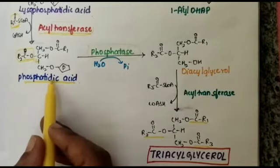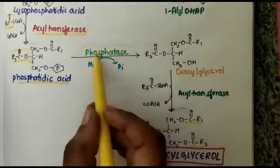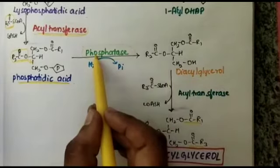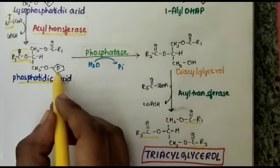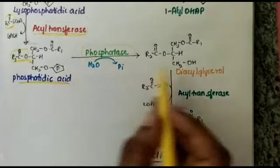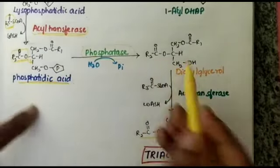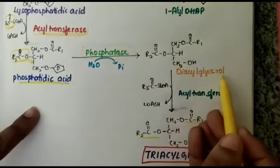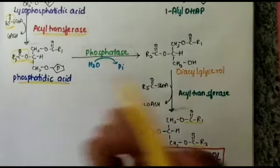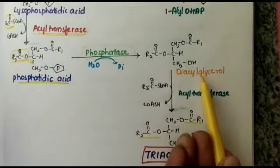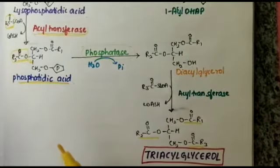This phosphatidic acid will convert into diacylglycerol by the enzyme phosphatase. The phosphate group is replaced by an H group, so it becomes diacylglycerol. Phosphatidic acid is thus converted into diacylglycerol by phosphatase.